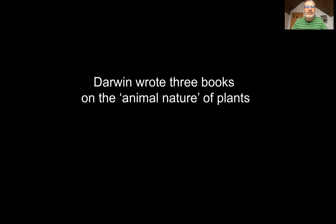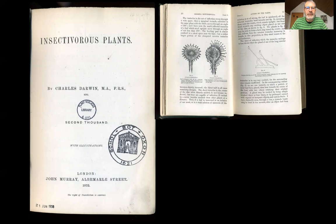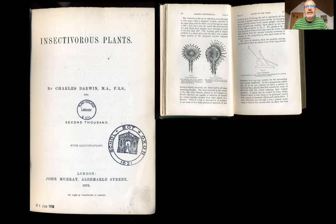Starting with the three books on what I've called the animal nature of plants: the first was on insectivorous plants — carnivorous plants that fascinated Darwin enormously. These are plants that have evolved modifications such that they can actually eat animals. Usually we think of animals eating plants, but many plants have evolved ways of catching and digesting animals. Darwin did lots of experiments with carnivorous plants, having them growing in his hothouse, doing many measurements of how their different parts moved and how they were able to digest insects.